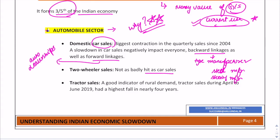Tractor sales are an important indicator of rural demand — if rural people demand tractors, it indicates investment and production activities in agriculture. Tractor sales have been falling, hitting their highest fall in nearly four years. The reason is that farm equipment sector sales were slow in the domestic market due to postponement of the festive season to April and lower Rabi sowing than expected.